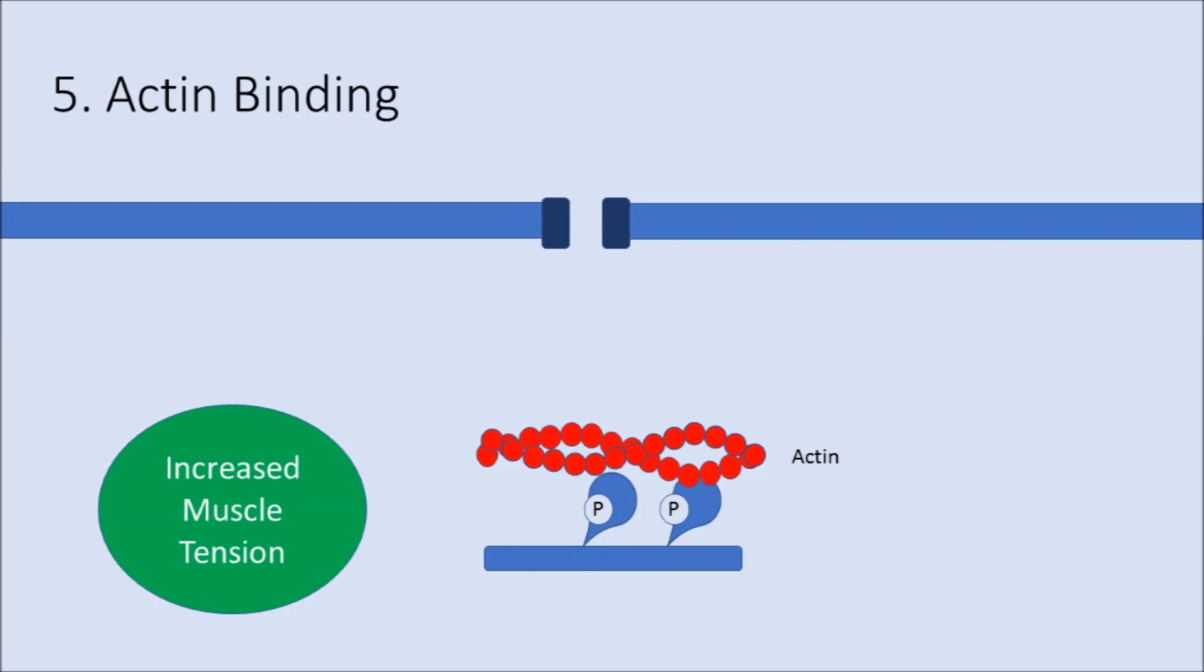The myosin that's been activated then goes on to bind to actin and slides along the actin, increasing the muscle tension.